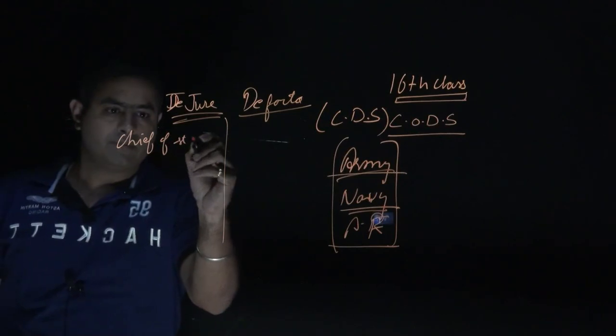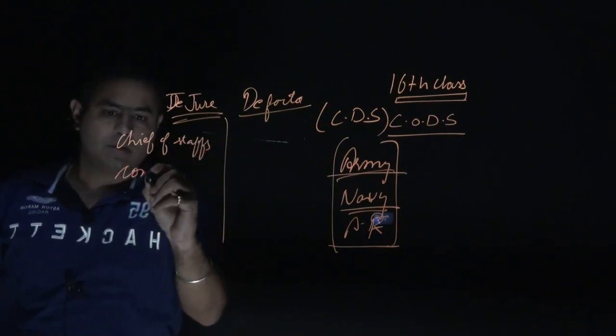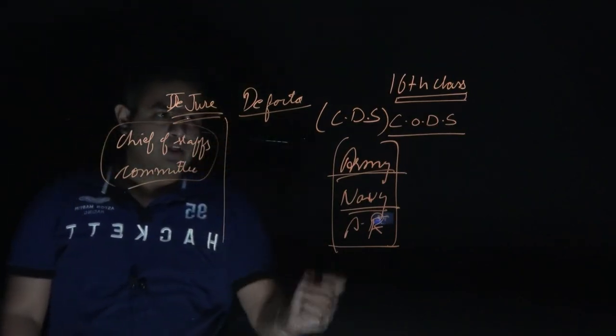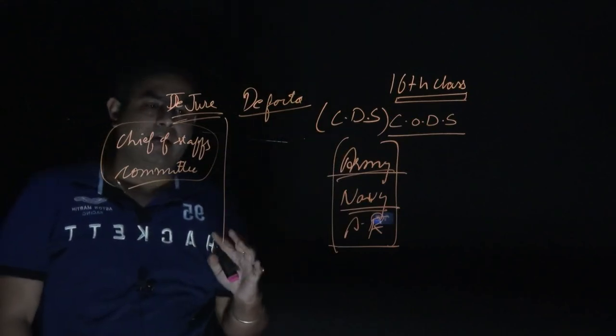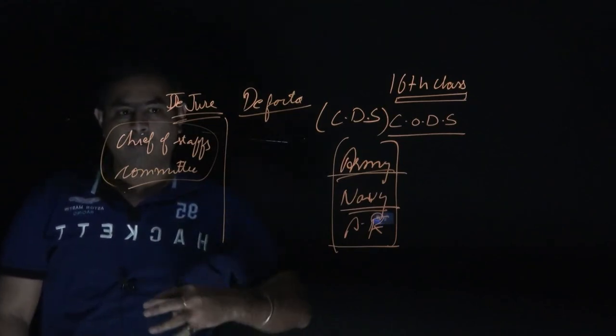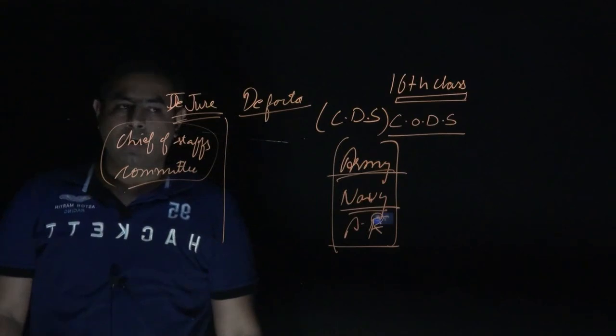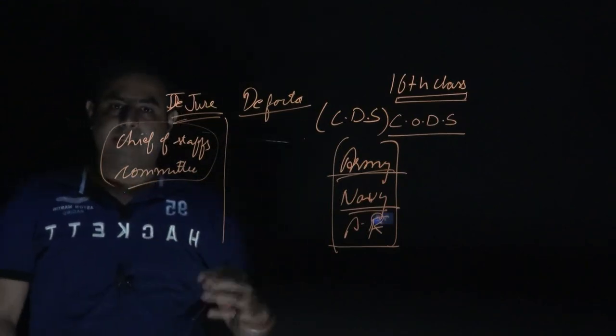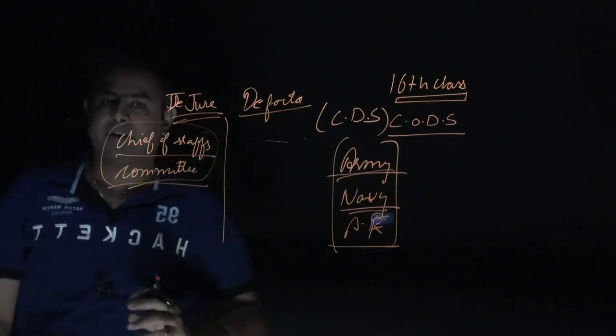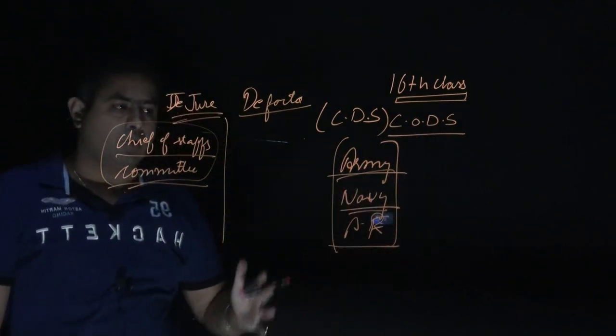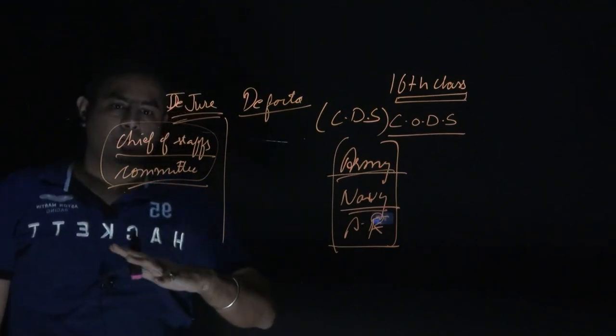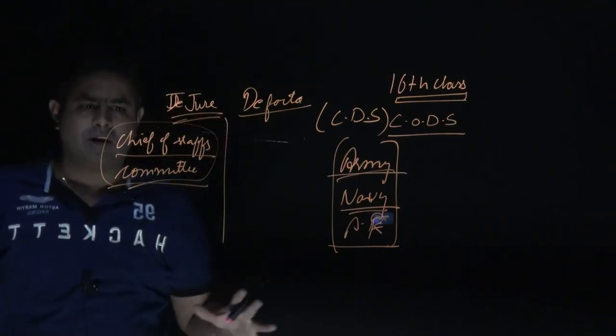This brings us to the Chiefs of Staff Committee. Who is in this committee? The three most senior people from Army, Navy, and Air Force form the Chiefs of Staff Committee. This committee maintains coordination among the three forces, but it doesn't have substantive real power to order the Navy or Army, make structural changes, or decide which battalion goes where.